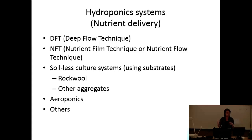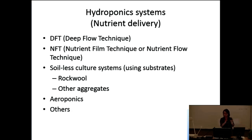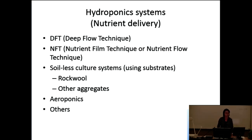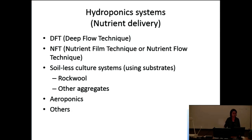NFT, relative to DFT, is much shallower — nutrient film technique — creating a nutrient film so roots are half in the water and half in the air. Water is constantly flowing, which reduces the boundary layer around the roots and reduces boundary layer resistance to nutrient absorption by diffusion. There are also soilless culture or aggregate-based hydroponic systems. Rock wool was invented in Northern Europe — Belgium, Netherlands, or Denmark.